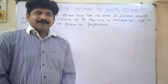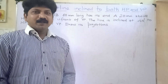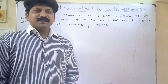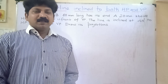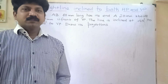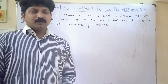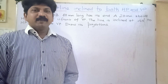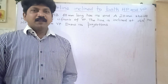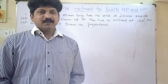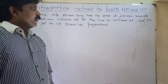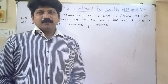Dear students, welcome to this engineering graphics video lecture. In the previous lecture we discussed about a straight line inclined to one plane. Today we are going to discuss about a straight line inclined to both HP and VP using the rotating line method.